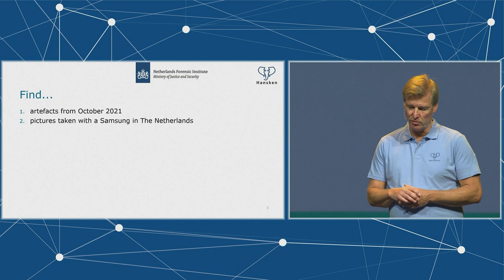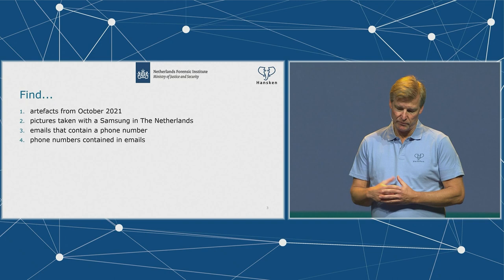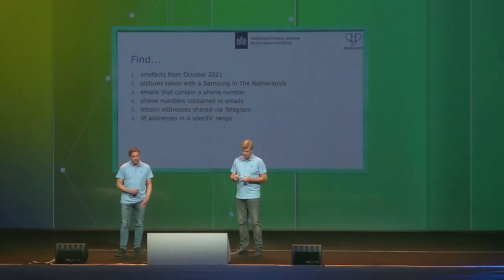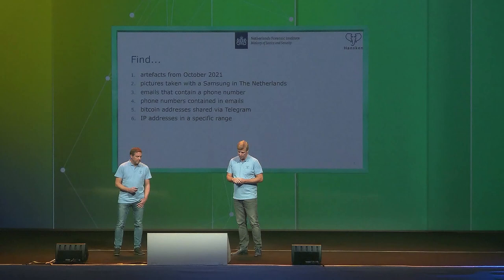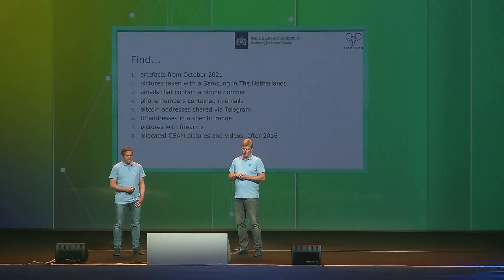Here's a quick overview of what we want to do: simple date search — find all artifacts from October 2021; which pictures were taken with a Samsung in the Netherlands (geolocation); which emails contain recognized phone numbers; which Bitcoin addresses are shared via Telegram — we're looking for the actual Bitcoin addresses, not just the messages. We also want to search for IP addresses using regular expressions, and do image classification using the FIRE library from the Netherlands Forensic Institute to find pictures containing firearms.